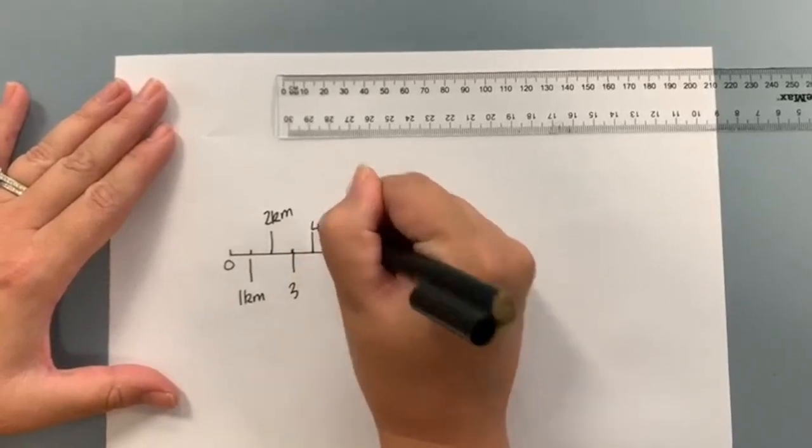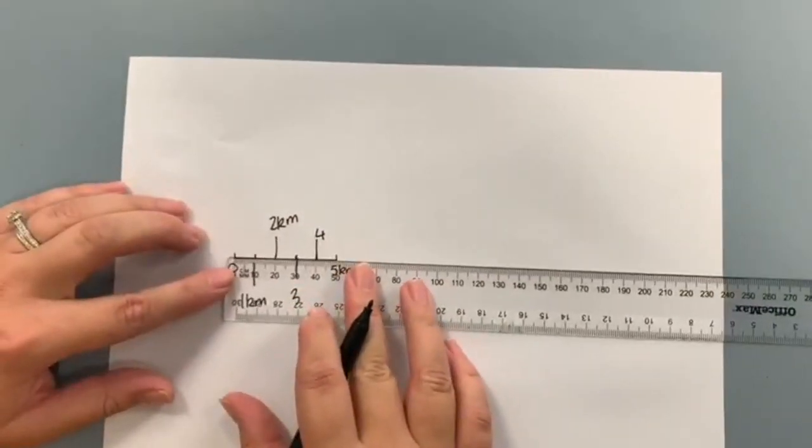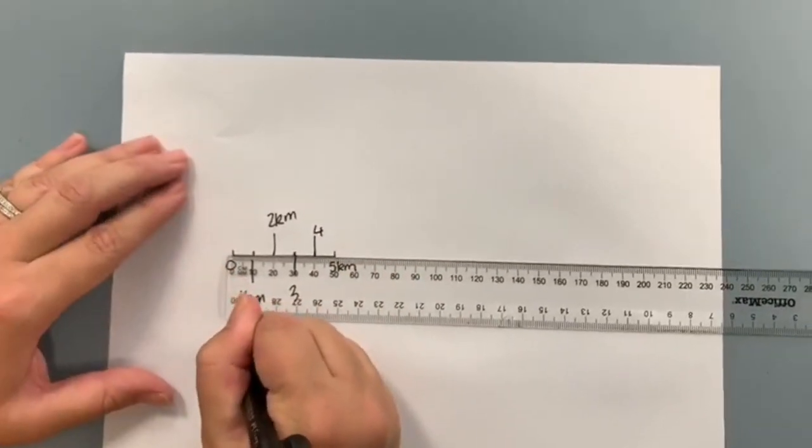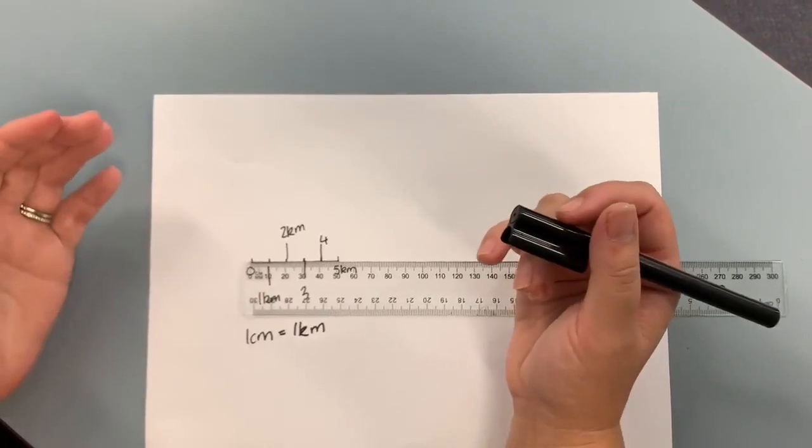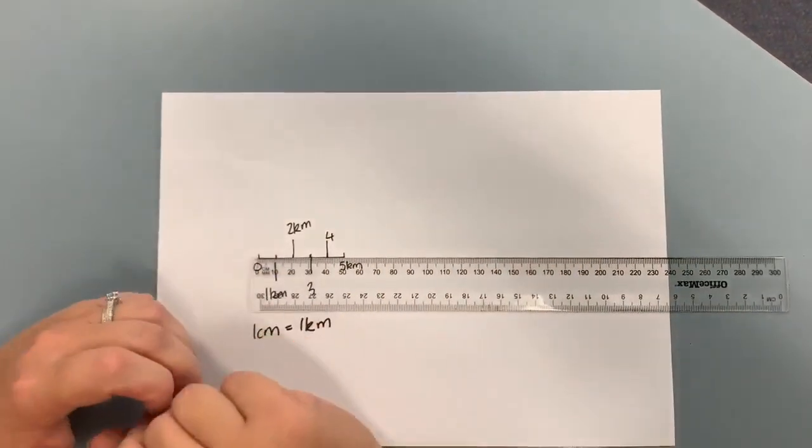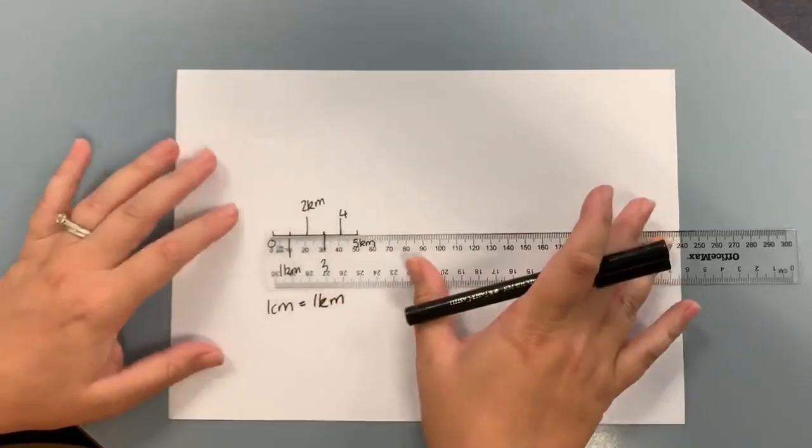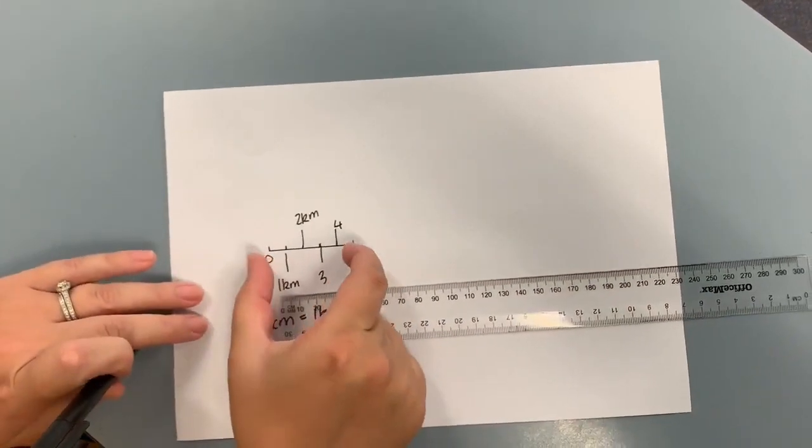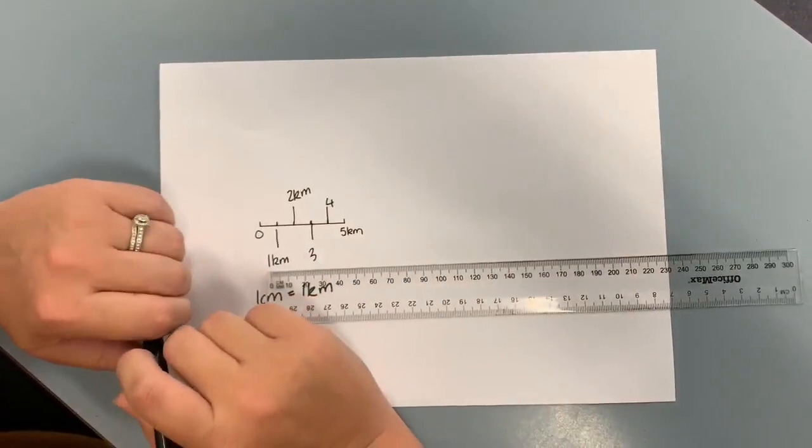What this really means is that each centimetre on our bar graph is equal to one kilometre in the real world. This is really useful when we want to estimate distance. This will be used on a lot of basic maps, and if you want to, rather than ruling, if you just want to get an idea of distance, you can just use your fingers and say, well, that's five kilometres, and you can measure it out from there, roughly how far it is between two points.